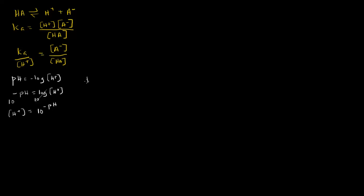Likewise, if we have pKa, that's equal to the negative log of the Ka. So we can do the same thing here. Negative pKa equals the log of the Ka. Take the base-10 of both sides, and then we get the Ka.